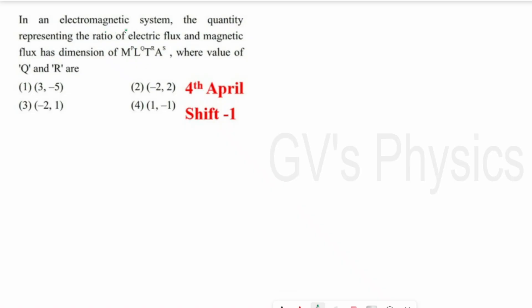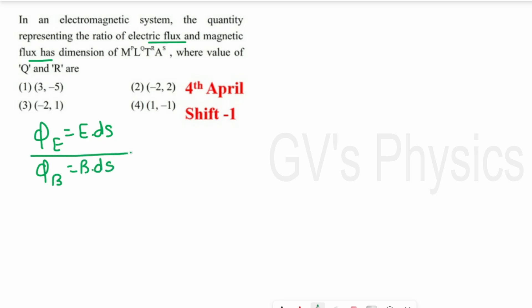First question: In an electromagnetic system, the quantity representing the ratio of electric flux and magnetic flux has a given dimensional format. They are asking the value of q and r, where q is the power of length and r is the power of time. To handle this question, first we have to find the ratio of electric flux to magnetic flux. Electric flux is E·dS and magnetic flux is B·dS. So the surface area cancels out, leaving us with electric field divided by magnetic field.